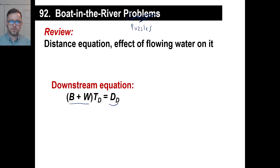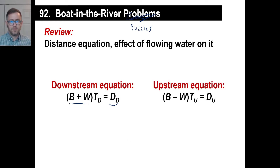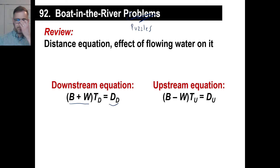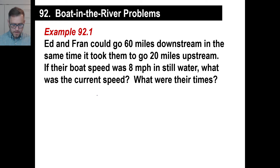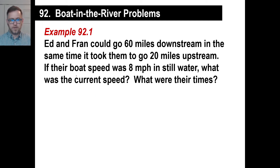If it's upstream, it's going to be B minus W — the boat speed minus the water speed. So let's do one. Ed and Fran could go 60 miles downstream in the same time it took them to go 20 miles upstream. If their boat speed was 8, what was the current speed? Anytime you see the word 'current,' just think 'water speed.'